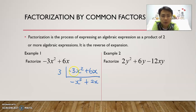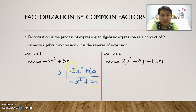When we divide by 3, we get negative x squared plus 2x. How do we do that? 3 divided by 3 gives you 1, so we get negative x squared. Then 6x divided by 3 gives us positive 2x. After that, we can actually divide some more — we can divide by x.